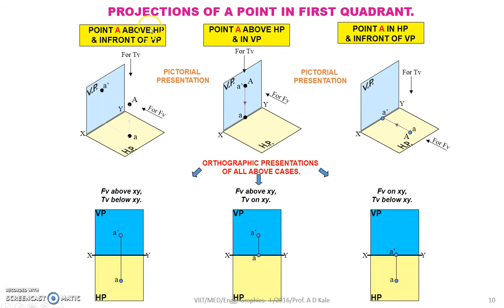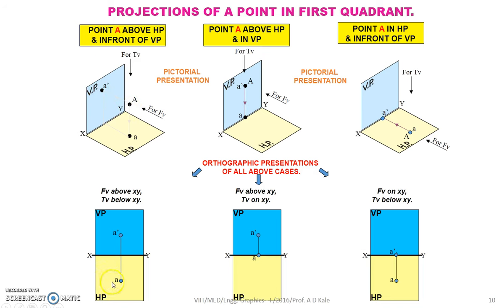Let us see the various positions of point A in the first quadrant. Suppose point A is above HP and in front of VP, as shown in this particular pictorial view. To draw the projection of this point A, you draw the XY line, understand the position with respect to HP, then draw the locus of A-dash, then understand the position of A with respect to VP, draw the locus of A in the plan, and then A-dash and A will lie on the same vertical projector.